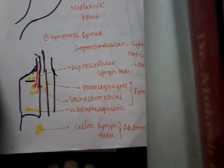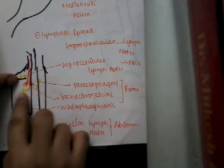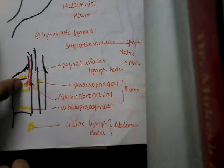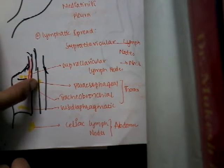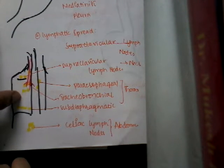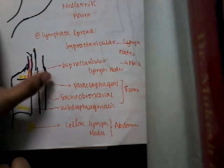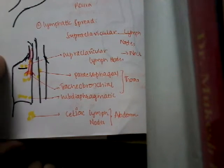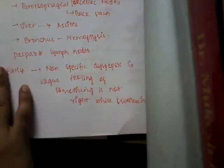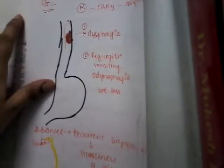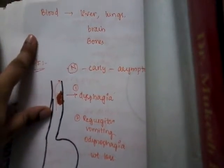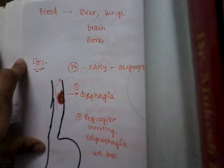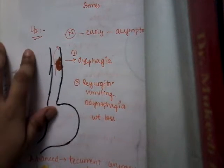Coming to the lymphatic spread: lymphatic spread occurs through supraclavicular lymph nodes in the neck, para-esophageal lymph nodes, tracheobronchial and subdiaphragmatic lymph nodes in the thorax, and celiac lymph nodes in the abdomen. Blood metastasis occurs through the liver, lungs, brain, and bone.